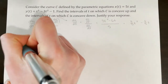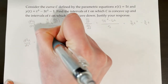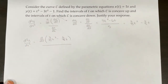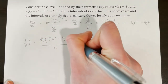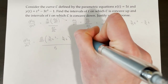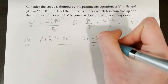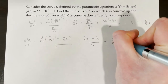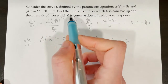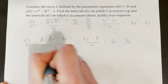Plugging back in: the second derivative equals d dt of 3/5 t squared minus 6/5 t, all over dx dt, which is 5. The derivative of 3/5 t squared minus 6/5 t is 6/5 t minus 6/5. That's all over 5, giving us 6/25 t minus 6/25 as the second derivative in terms of t.